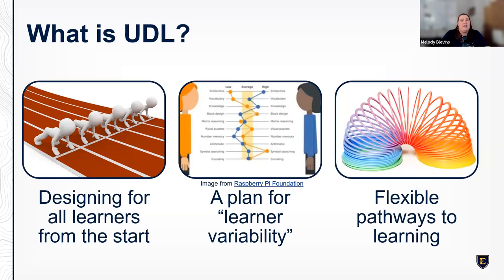I'm going to focus on three key markers of UDL. First, universal design for learning is a framework — not a process or something you have to buy into. It is a mindset you use to design learning for everybody from the beginning, planning with the end goal in mind. Rather than making a plan and then trying to fit certain populations into it, we start with a design that casts a wide net to reach as many people as possible. We can make variations as needed, but planning with a wide lens means fewer modifications later.